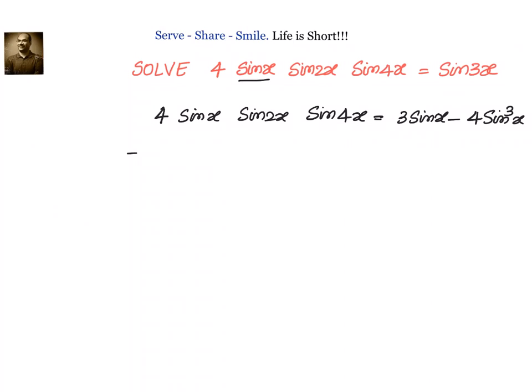Now you can see that I can take out sin x. It will become sin x times 4 sin 2x sin 4x, which equals sin x times 3 minus 4 sin squared x.